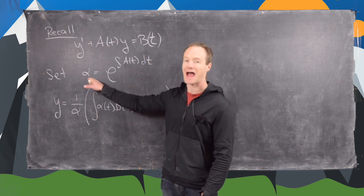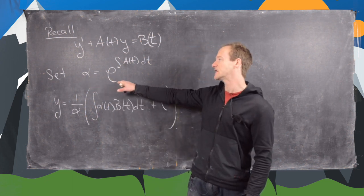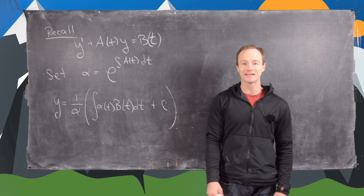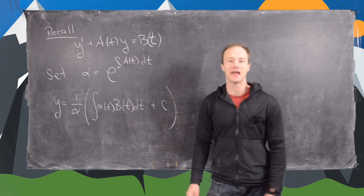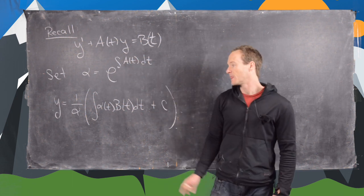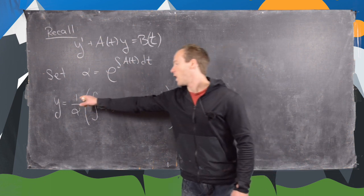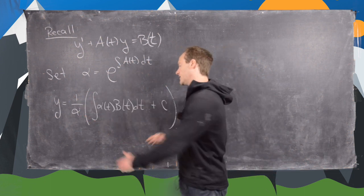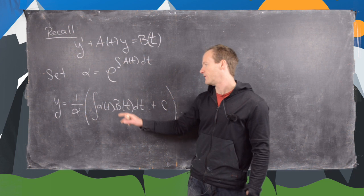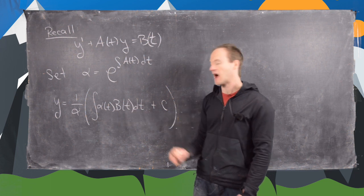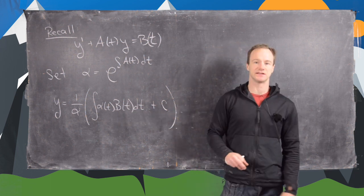The solution is given by the following: you set alpha equal to the exponential of the antiderivative of a of t, and then we get our solution is 1 over alpha times the quantity — the antiderivative of alpha times b — plus a constant c.